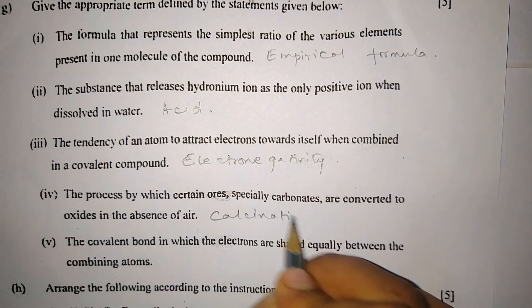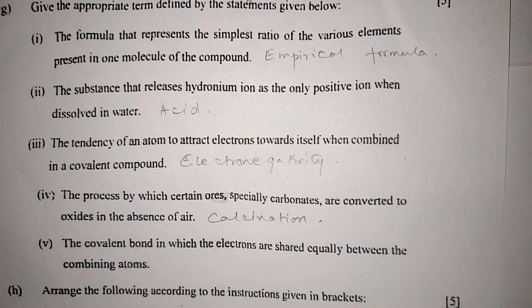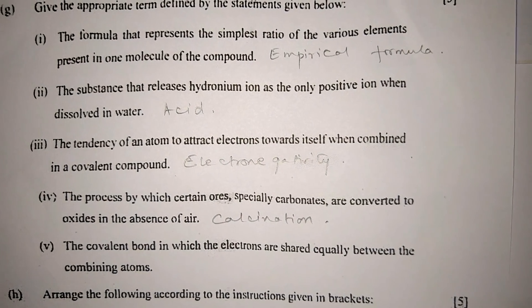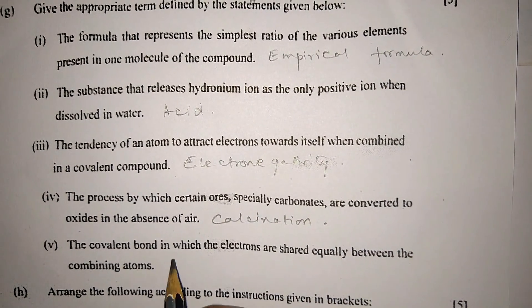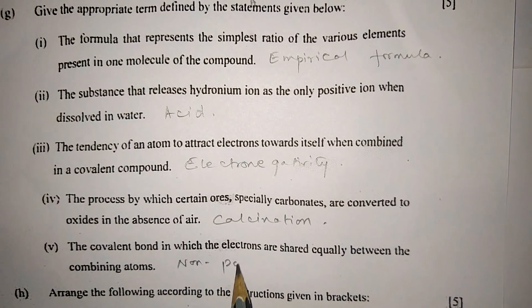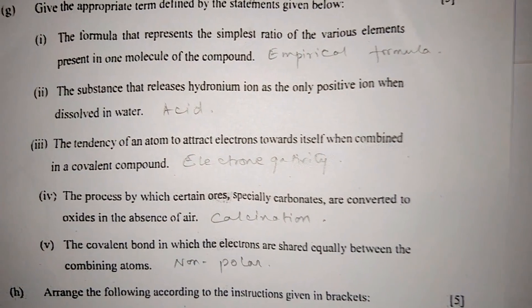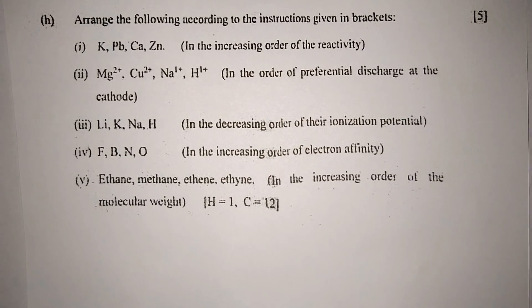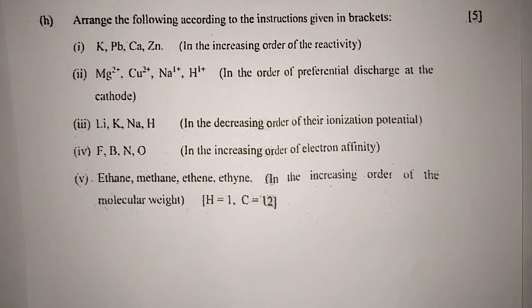Number four: The process by which certain ores, especially carbonates, are converted to oxides in the absence of air is known as calcination. Number five: The covalent bond in which the electrons are shared equally between the combining atoms is non-polar covalent bonds.